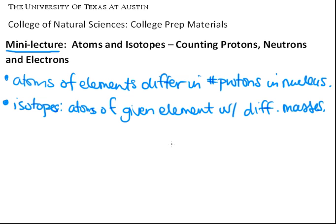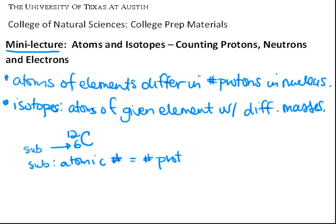So what does this look like? Let's say we have carbon-12. Carbon is the sixth element. These two numbers are given to us from the periodic table. The bottom number is the subscript, and that refers to the atomic number — carbon is the sixth element, so its atomic number is six. The top number, the superscript, is the atomic mass.